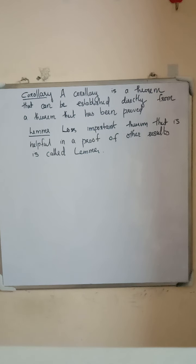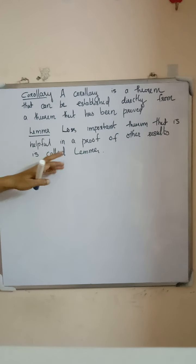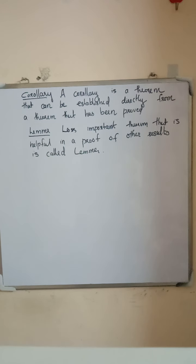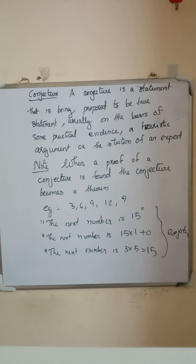For example, if a, b, c are sides of a right triangle, then by the Pythagoras theorem, a² + b² = c². That is a theorem. The corollary obtained from this theorem is: if three sides a, b, c satisfy the Pythagoras theorem, then a, b, c are Pythagorean triplets. That is a corollary. Similarly, a lemma is a less important theorem that is helpful in the proof of other results.